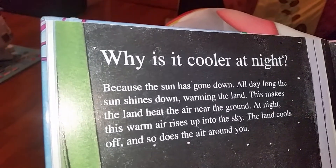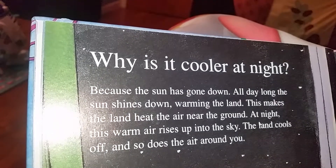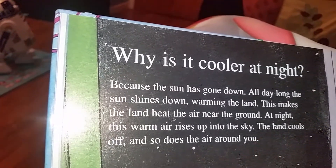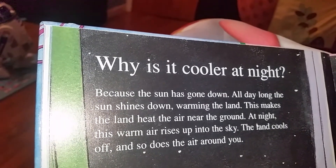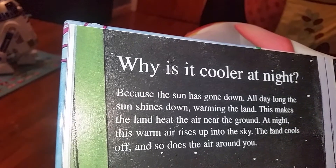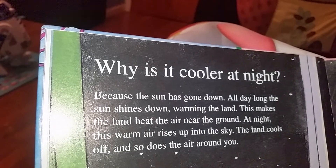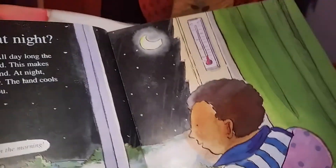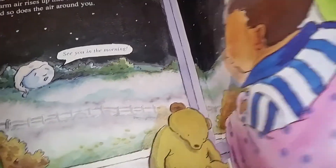Why is it cold at night? Because the sun has gone down. All day long the sun shines down, warming the land. At night this warm air rises up into the sky. Everything cools down, and so does the air around it. Did you notice it gets colder at night? Because there's no sun.